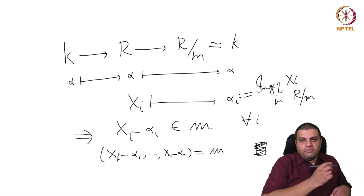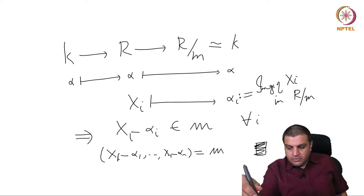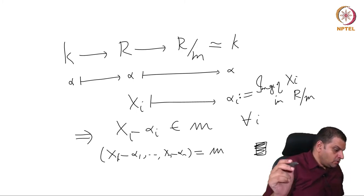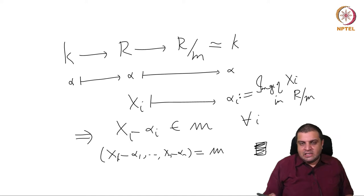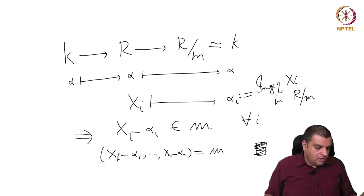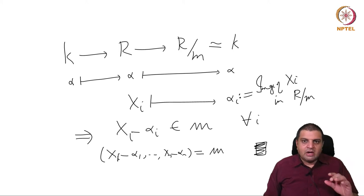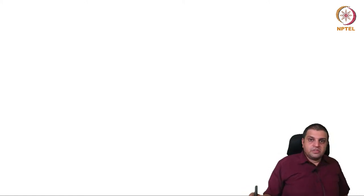So this is the proof of version 2 of the Nullstellensatz, assuming version 4. Now we will prove version 4 of the Nullstellensatz, assuming the normalization lemma. In the next lecture we will prove the normalization. It is a little technical argument playing with polynomials, but we will give a quick argument for a special case in this lecture itself.